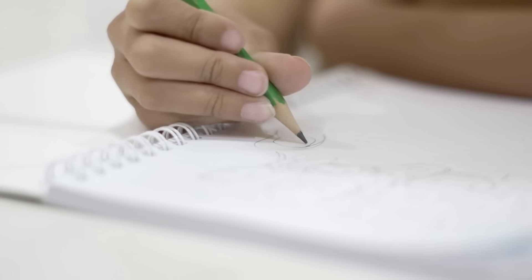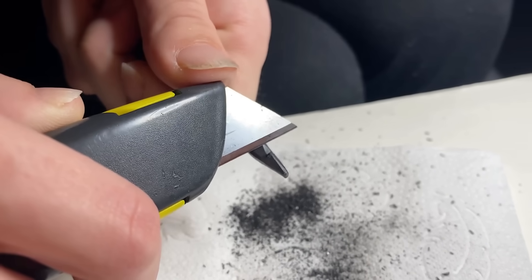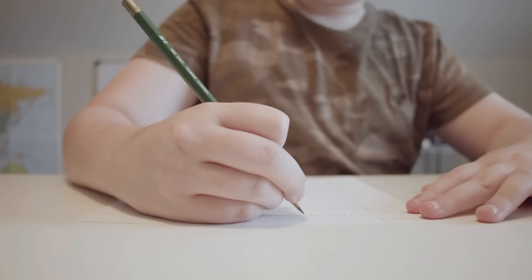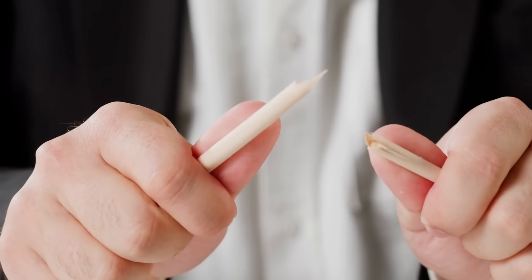Have you ever stopped in the middle of writing with a pencil and thought, wait, why do we call this stuff lead when it's clearly not metal? After all, pencils don't feel heavy like they're filled with lead pipes. You don't get poisoned from doing your math homework, and if you've ever snapped one in half, the inside doesn't look anything like shiny gray metal.